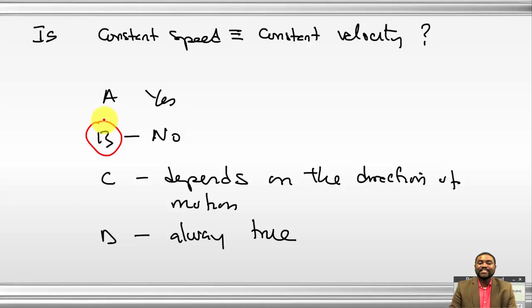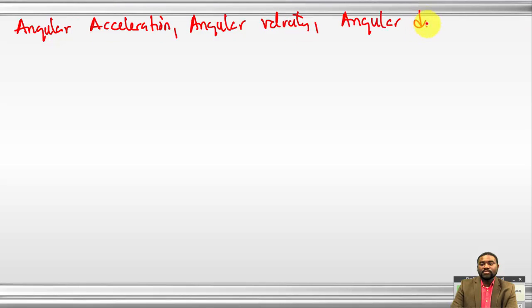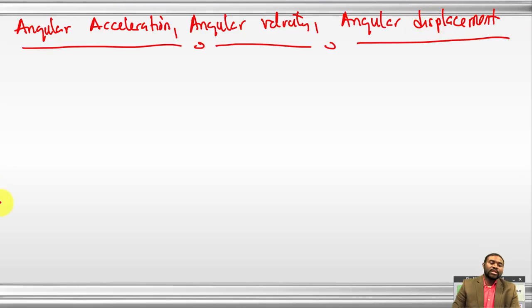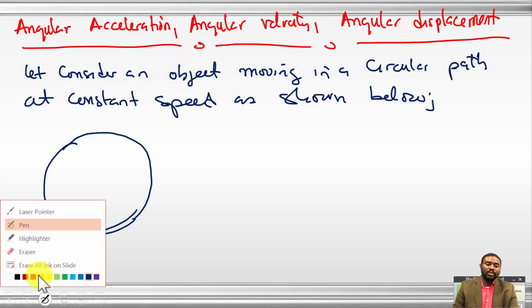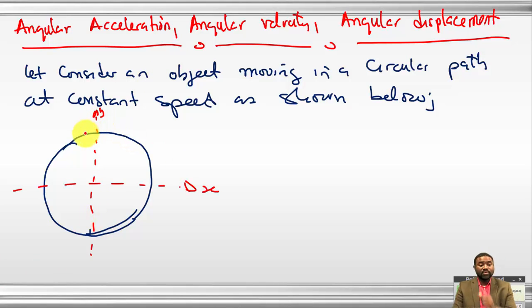Now I'm going to introduce three new terms: angular acceleration, angular velocity, and angular displacement. Let's consider an object. We superimpose our coordinate axes — this is X and that is Y, this is the origin.